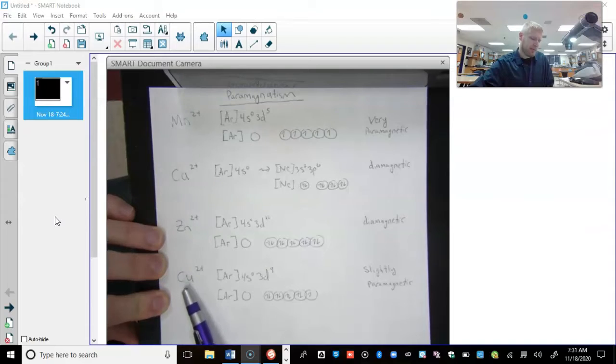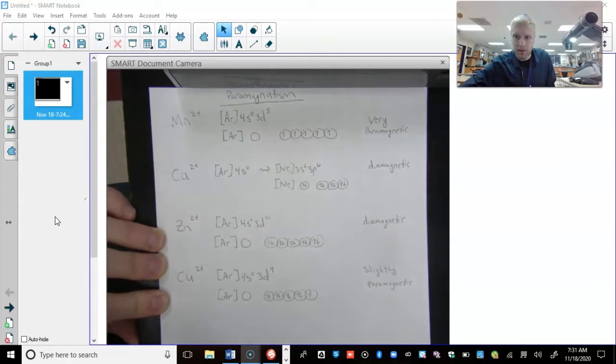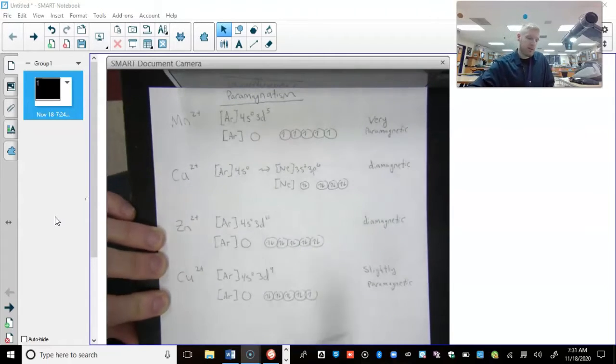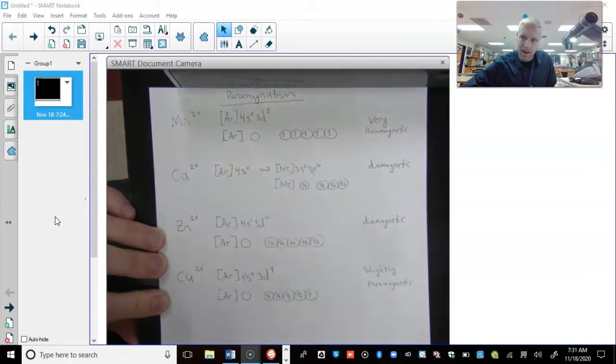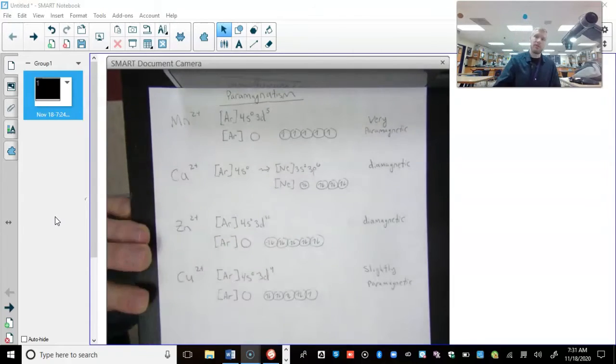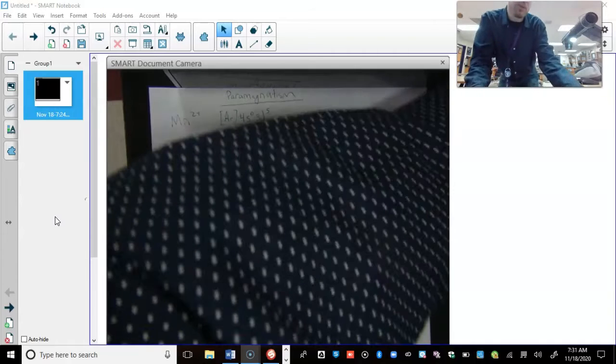And then we have copper 2+, take the two outer electrons away. And it's very diamagnetic, but there is one d suborbital that has just one electron in it that's unpaired. So this is going to be slightly paramagnetic. So that is my hypothesis. What we're now going to do is go to the actual chemicals.